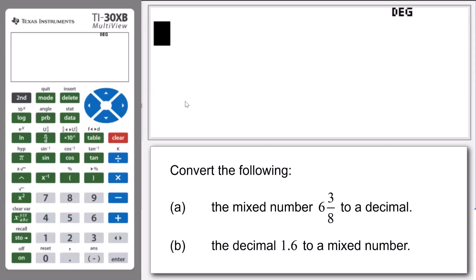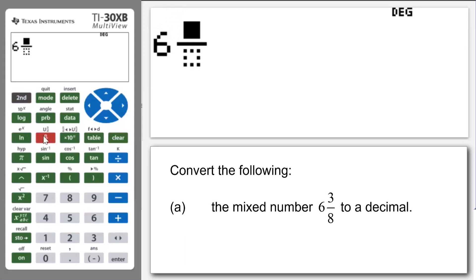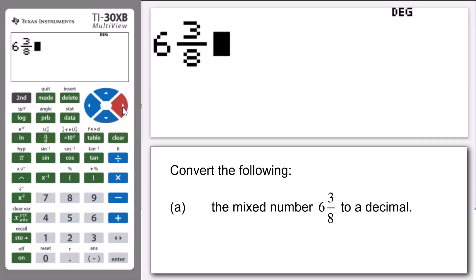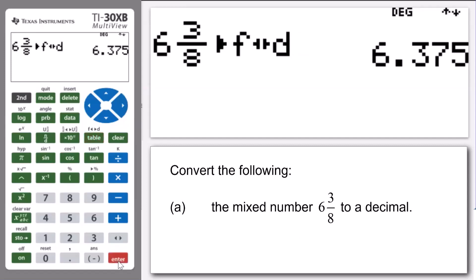Let's look at the first one. We enter 6 and press Second and then our fraction key, and up comes our mixed number template. We enter 3 in the numerator box, press arrow down, and enter 8 in the denominator box. Then we press arrow to the right to move out of the denominator. We now press Second, Table, and up comes our fraction to decimal conversion feature. If we press Enter, we see that 6 and 3 eighths as a decimal is 6.375.